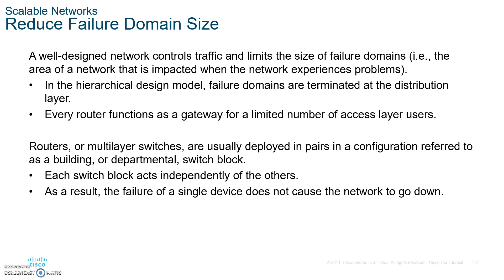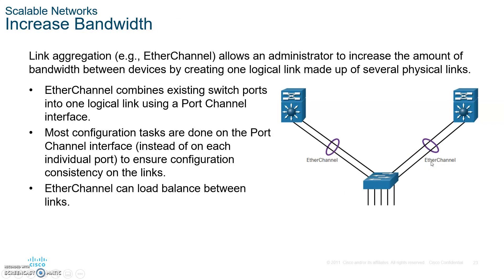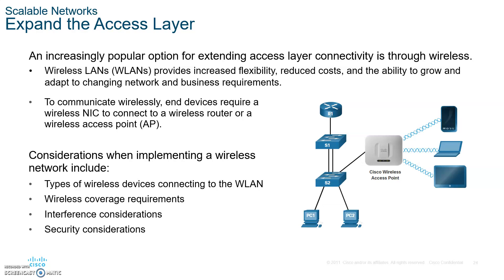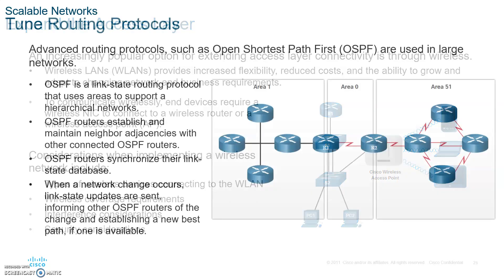A well-designed network controls traffic and limits the size of failures. We also talked about redundant gateways using HSRP. To increase bandwidth, if you have unused ports, aggregate them together using EtherChannel to improve trunk performance. You can also use a wireless controller to control and configure multiple access points in a LAN, giving you more flexibility and making expansion easier.